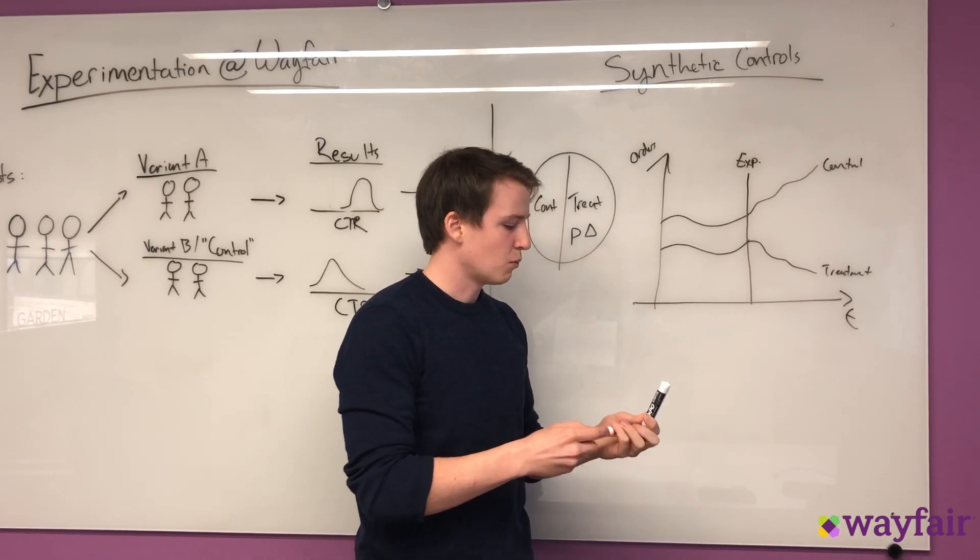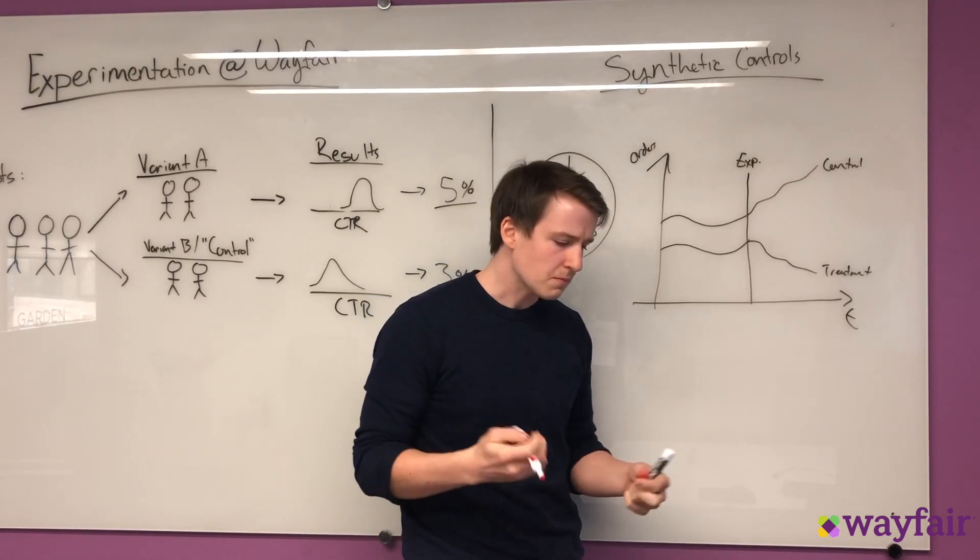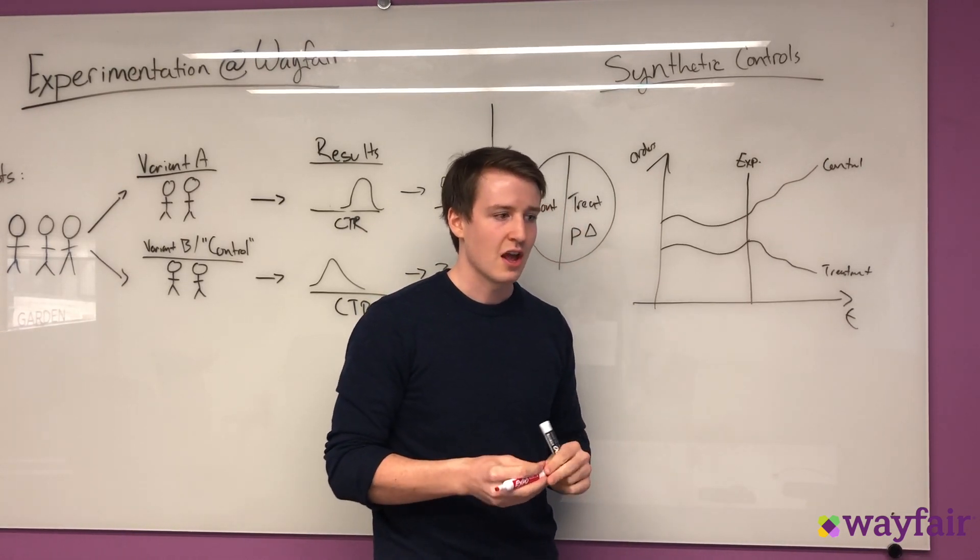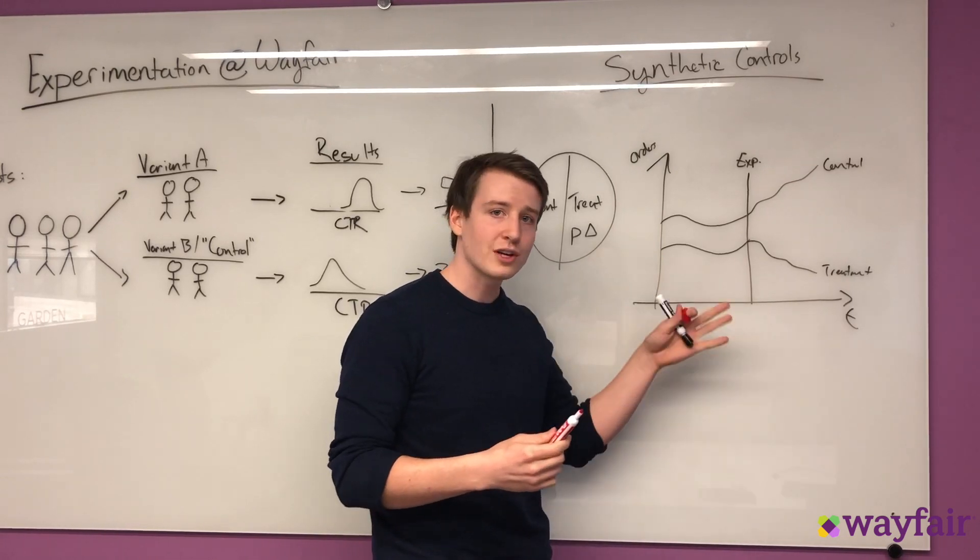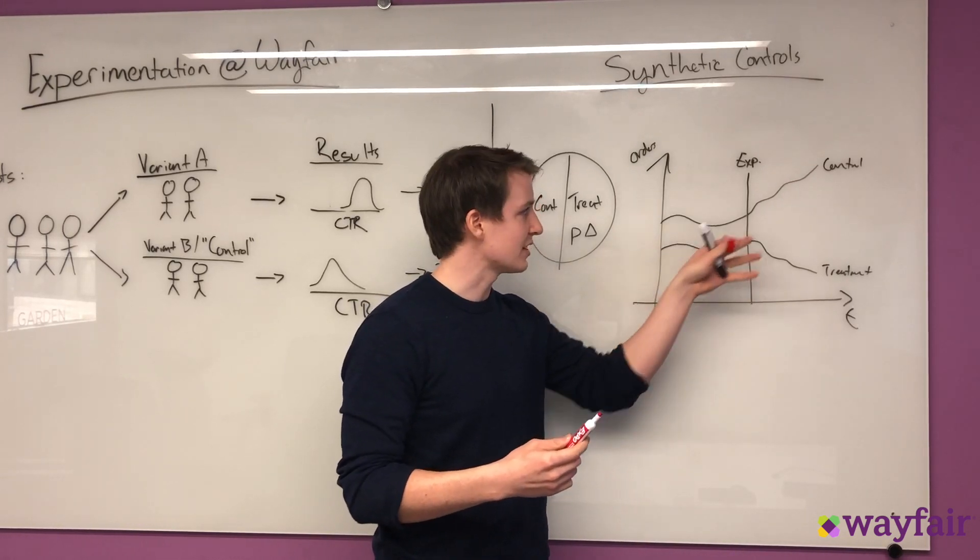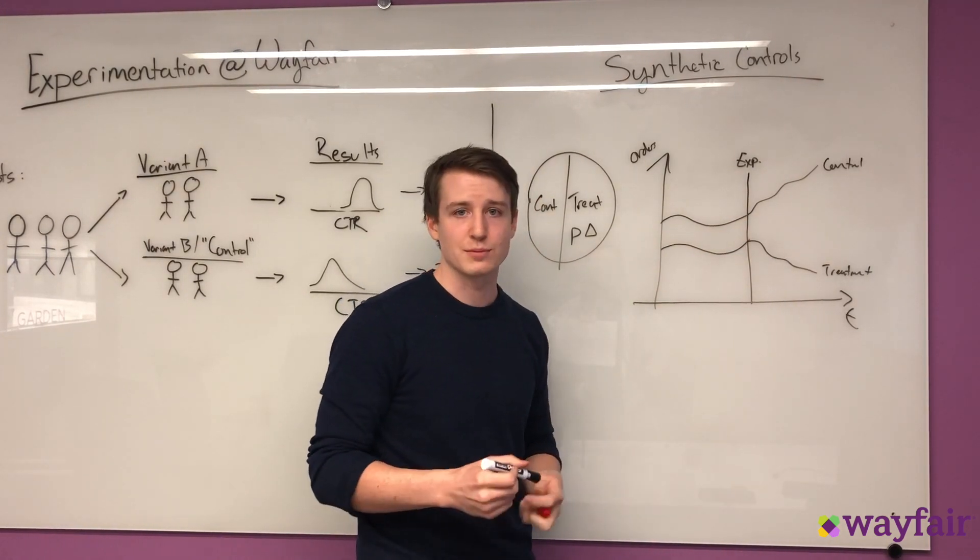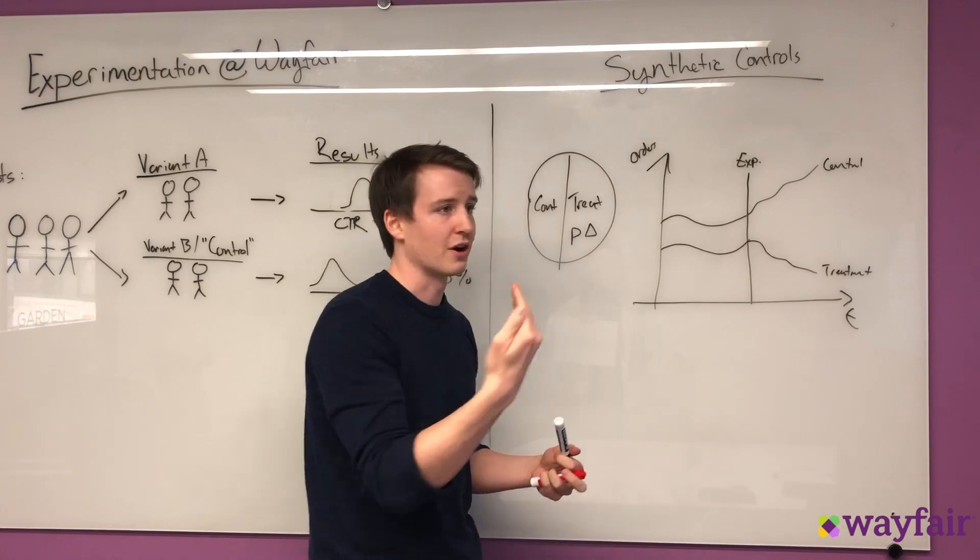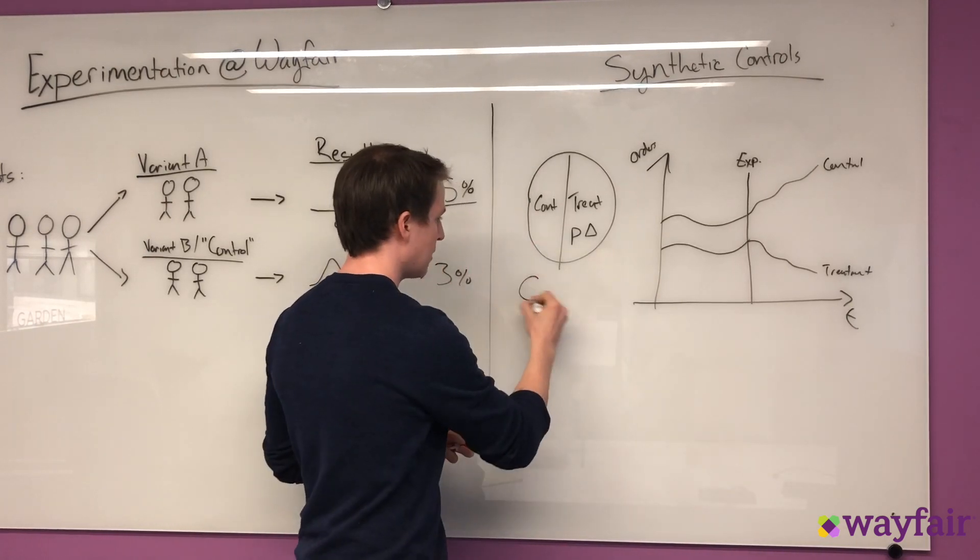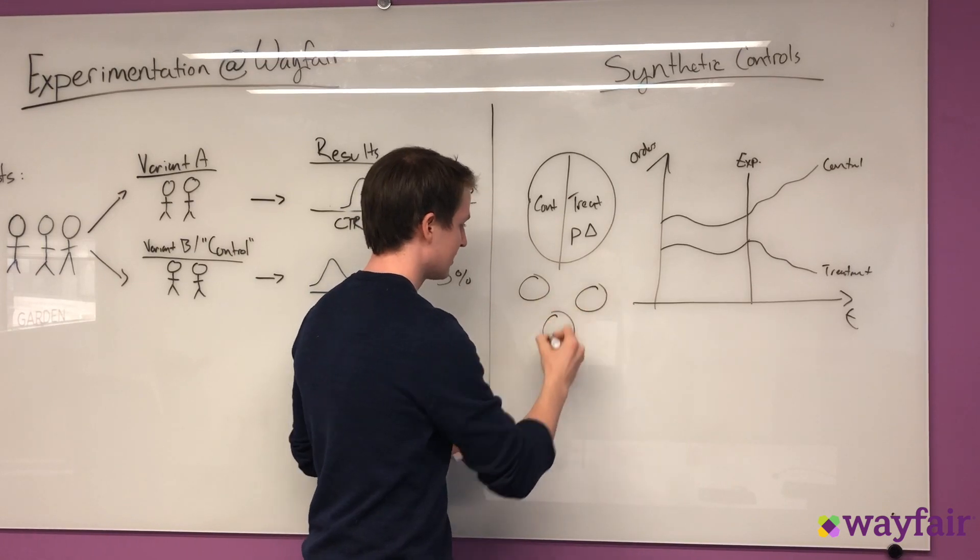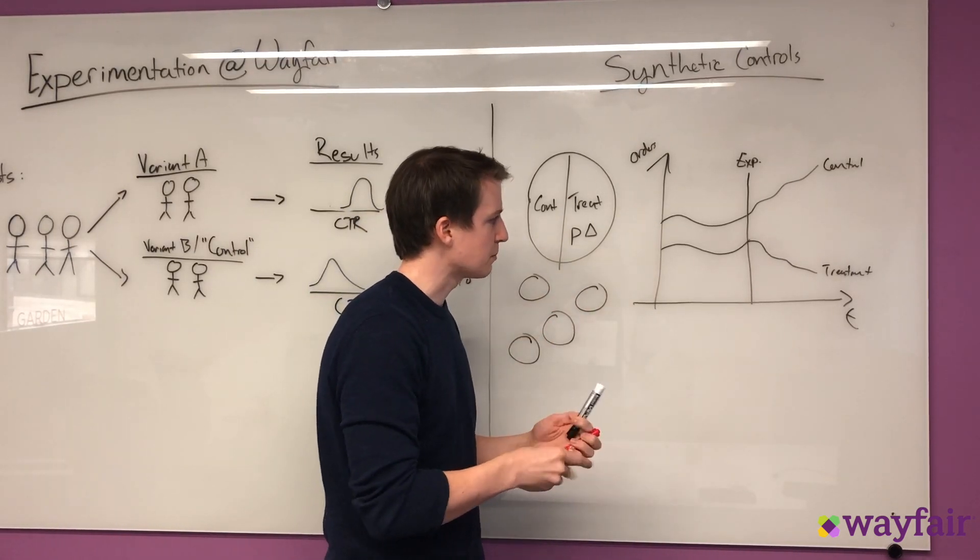Then we might want to employ what's called synthetic controls. And so synthetic controls are simply just other groups of products that are going to be correlating with your series of interest, let's say your control group, and then you can just draw these random groups from the rest of your sofas, armchairs, or bare ottomans. So you just populate a lot of random synthetic controls, and then you can plot them.